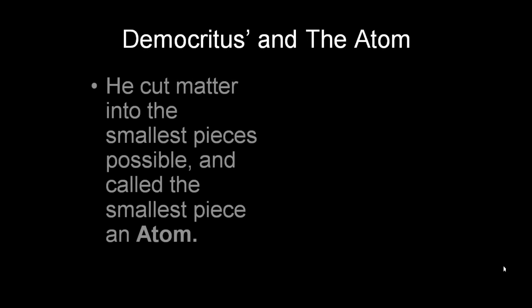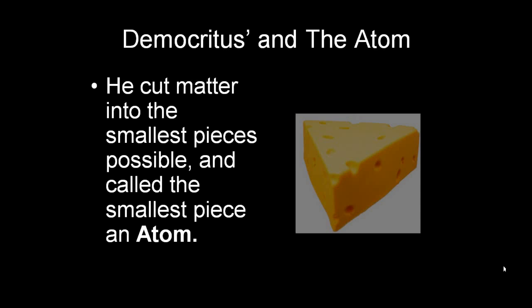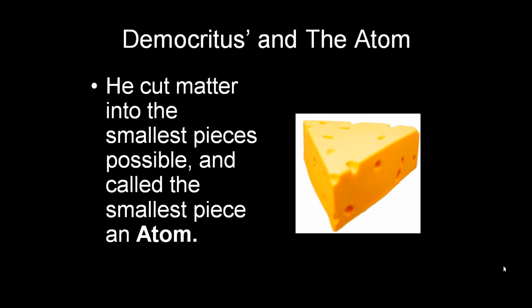So how did he study the atom? Well, Democritus took a piece of cheese and he cut it in half. And then he cut that half in half again, and so on and so on, until he couldn't cut it anymore. The smallest piece, as a result of that experiment, Democritus called the atom. He wasn't sure what it was made of, but he thought that was the smallest possible piece of matter.